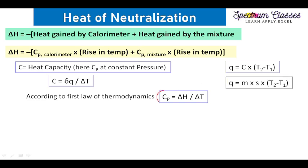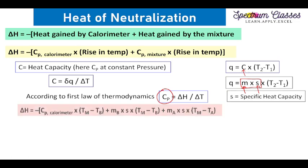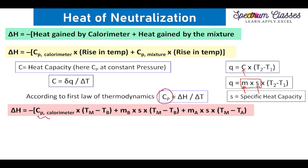The heat capacity can also be determined by mass multiplied by specific heat. Specific heat is defined as the energy required to raise the temperature of one gram of a substance by one degree. Multiplying specific heat by mass gives the heat capacity of that particular substance.